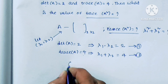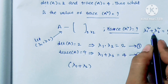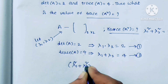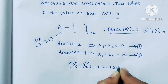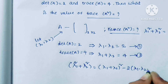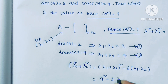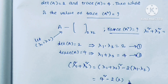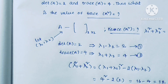We know lambda 1 plus lambda 2 equals 4. We want lambda 1 square plus lambda 2 square, which we can write as (lambda 1 plus lambda 2) whole square minus 2 times lambda 1 times lambda 2. That is 4 square minus 2 times 2, which gives us 16 minus 4, equal to 12.